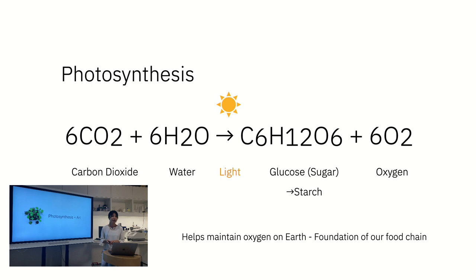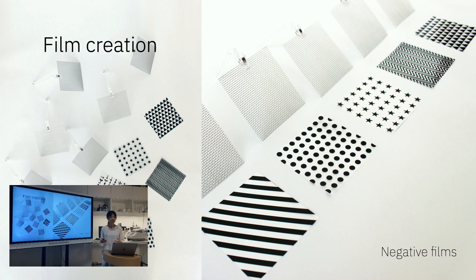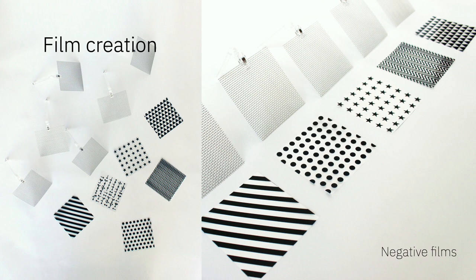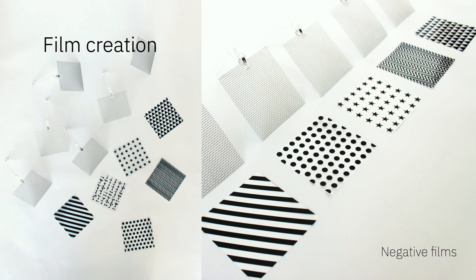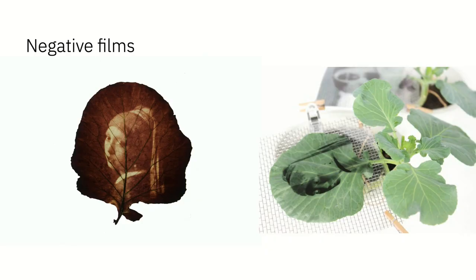How do we use photosynthesis in creation of art? In the photosynthesis graphic print series, which I call the Photosynthographs, the first step is film creation. I create different types of graphic patterns on my computer using any design software, then print them on a transparent plastic film. The key point is to create a negative film, meaning the black and white tones will be reversed in the actual print. If you don't have a printer for plastic films, you can cut out pieces of black paper and attach those on the plants to create patterns.